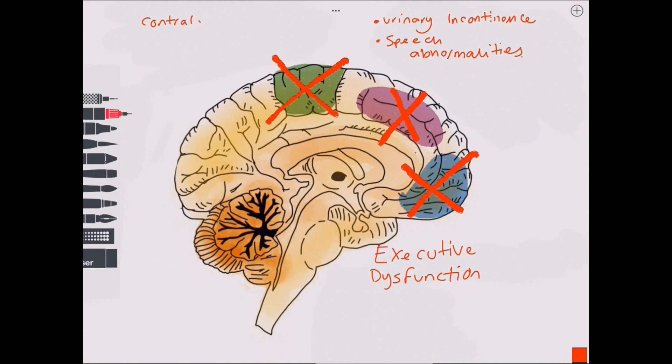Damage to the paracentral lobule can cause sensory and motor disturbance of the contralateral lower limb, which may include hemiparesthesia and hemiparesis.